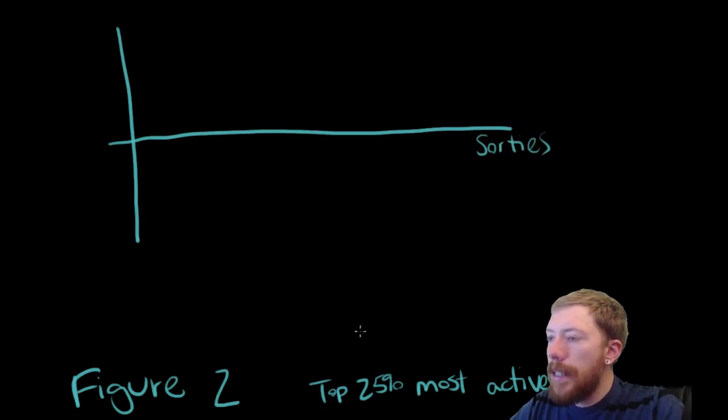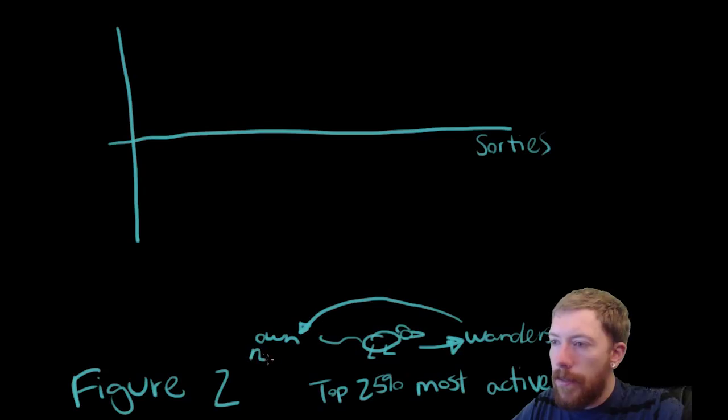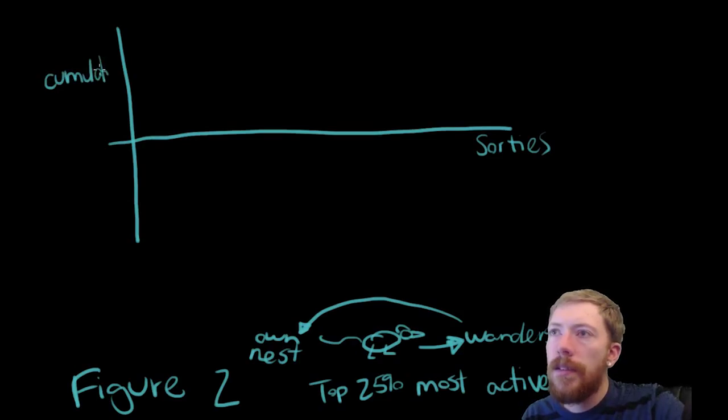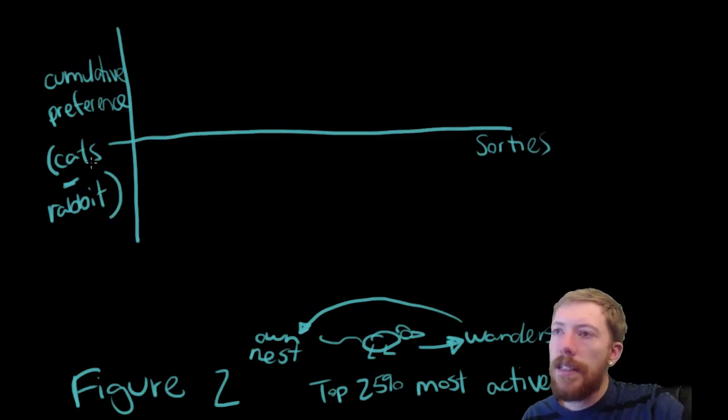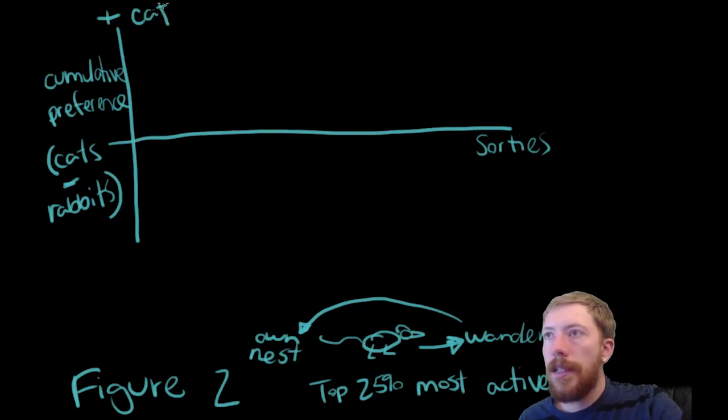So, on the x-axis, we have what they are calling sorties. And I had to look this up. But what a sortie is, is it's basically when the rat leaves its nest, it wanders around in the box, and then it retreats back to its own nest. And that's considered, and from my understanding, that's what the sorties are. Now, on the y-axis, they have the cumulative preference, is what they're calling it. But what you can think of this being, what they're calculating here, is the number of times that the rat would visit the cat urine versus the number of times the rat would visit the rabbit urine. So, a positive value would indicate that the rat is spending more time near the cat urine. And a negative value means that they're spending more time near the rabbit urine. And we'll say that this is zero.